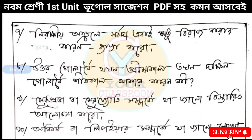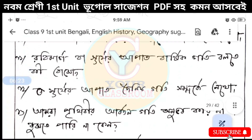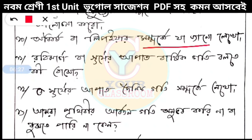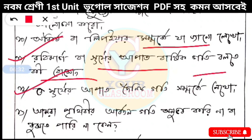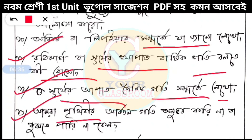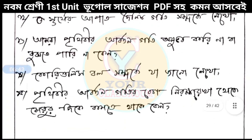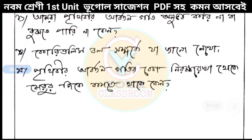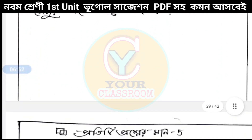Grishma Kal (summer season), Dakhin (south), Shitkal (winter season) — reasons for seasonal changes discussed. Why can we not stay in winter? The next topic: Earth's orbital motion, speed, and direction relative to the axis (Merudandi).